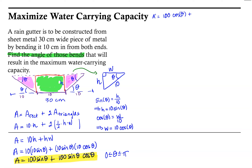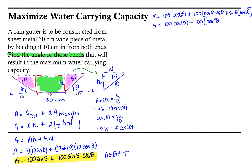The derivative of 100 sin θ is 100 cos θ, plus we use the product rule on the second term. Using the product rule, the derivative of sin θ · cos θ is cos θ · cos θ plus sin θ · (−sin θ). So A′ = 100 cos θ + 100(cos²θ − sin²θ).